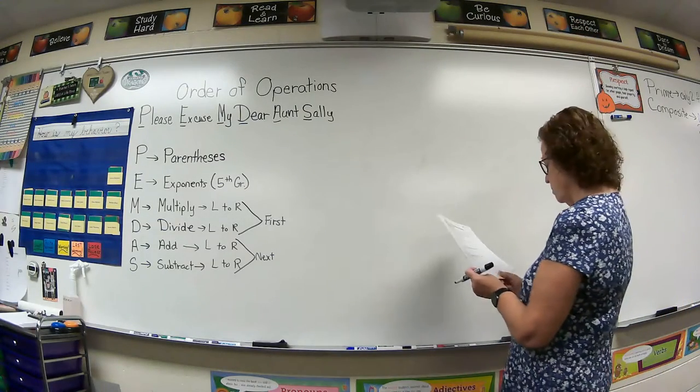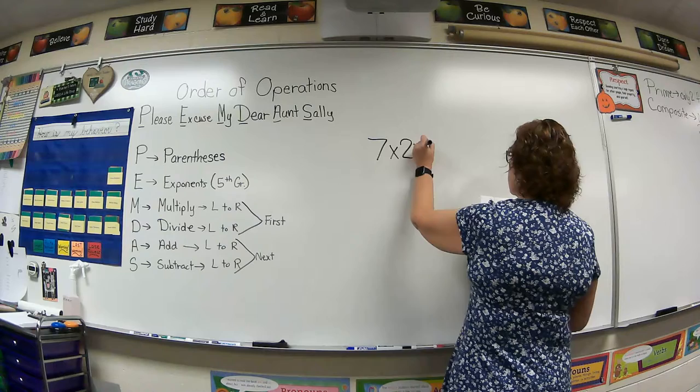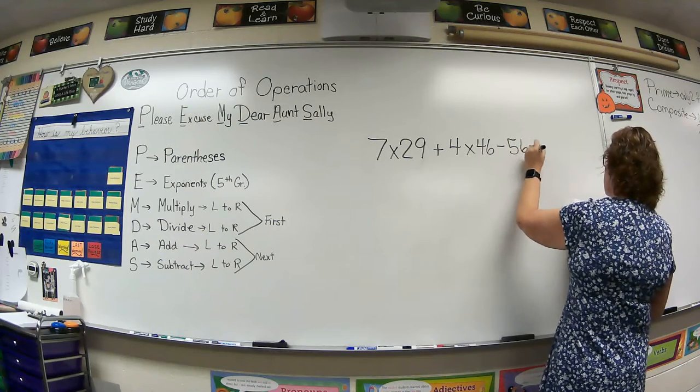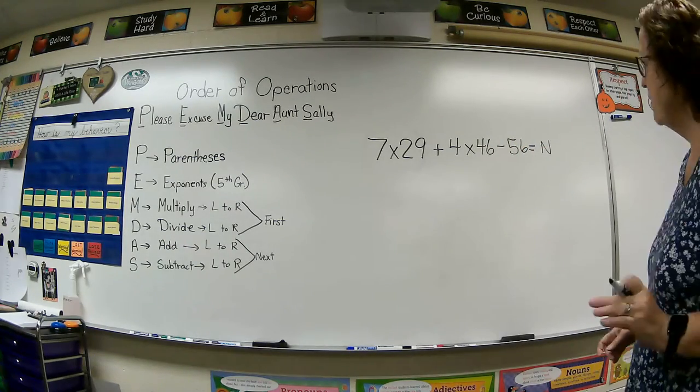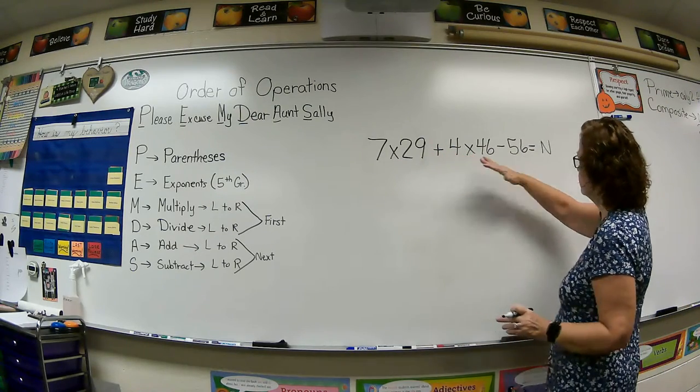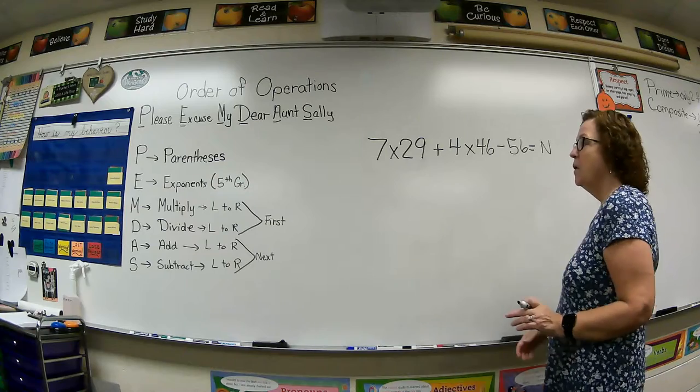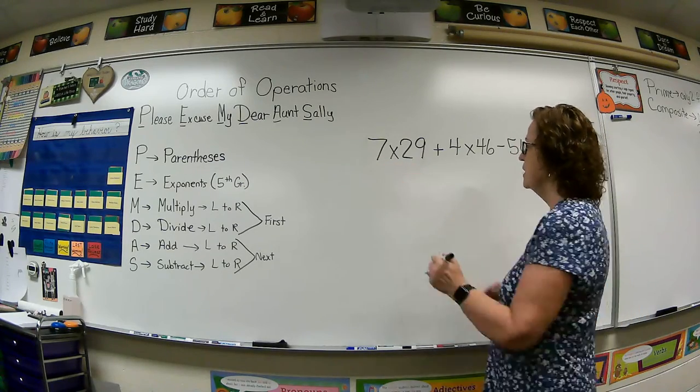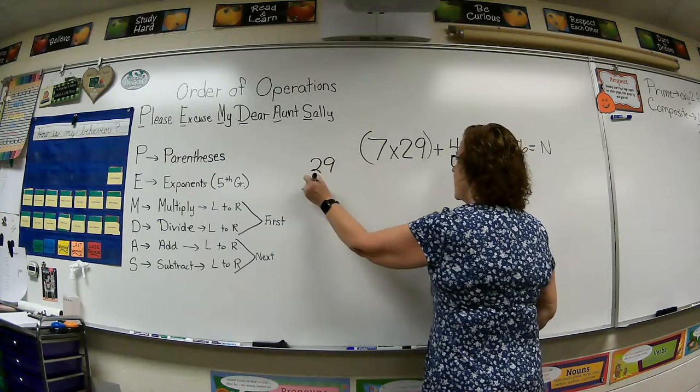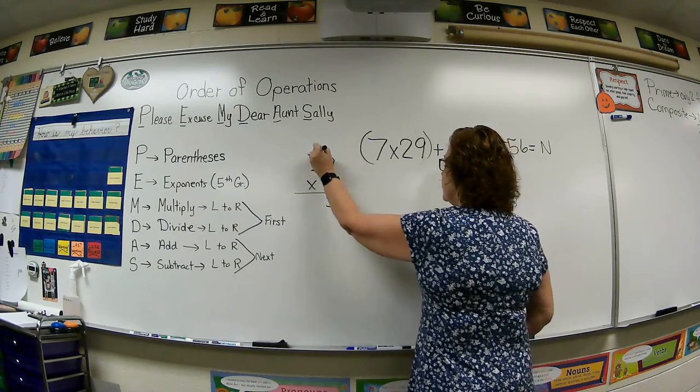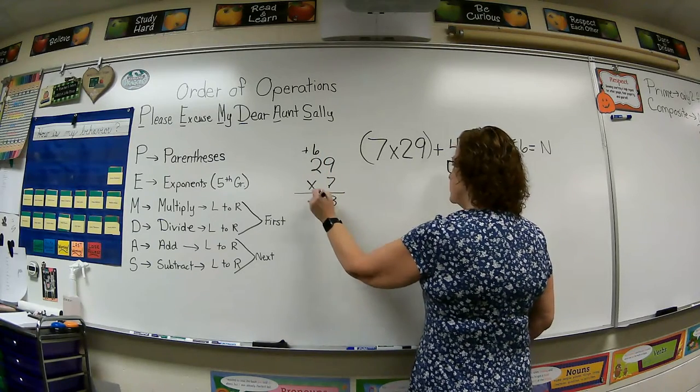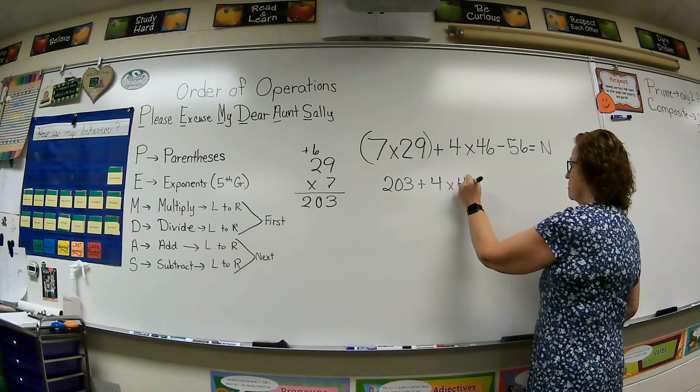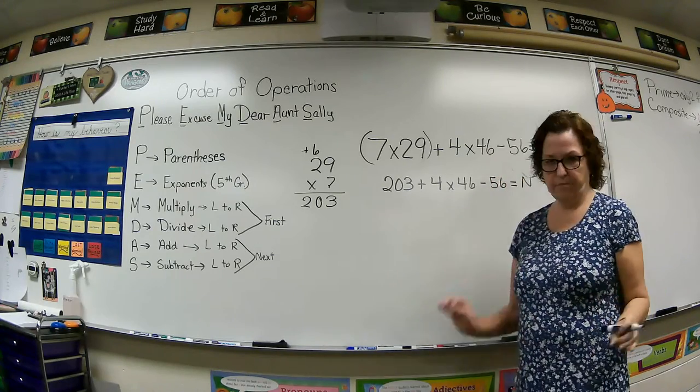Let me put another equation up, and we'll do some more. All right. So now we have 7 times 29 plus 4 times 46 minus 56 equals N. All right. We don't have any parentheses on this one. No exponents. So multiply or divide, left to right. Well, this is what we come up with first, left to right, is the 7 times 29. So over to the side, 7 times 29. 7 times 9 is 63. Carry your 6. 7 times 2 is 14 plus 6. 7 times 2 is 14 plus 6 is 203. Now, we bring this down, and we're going to start over with our order of operations.